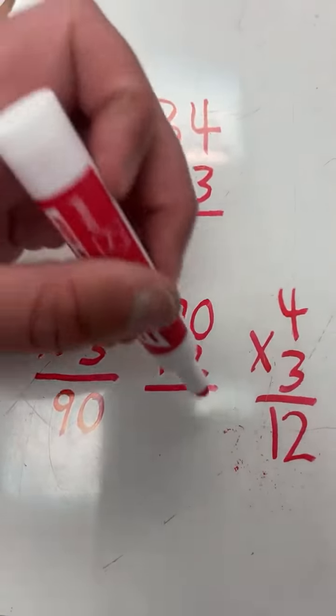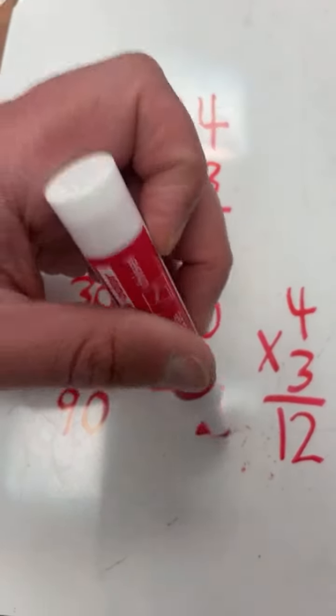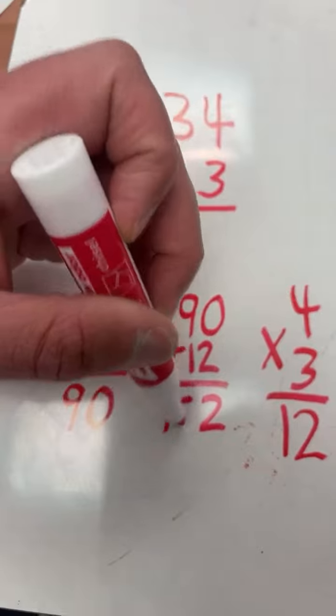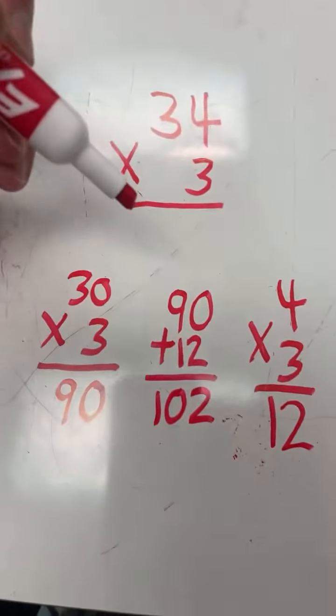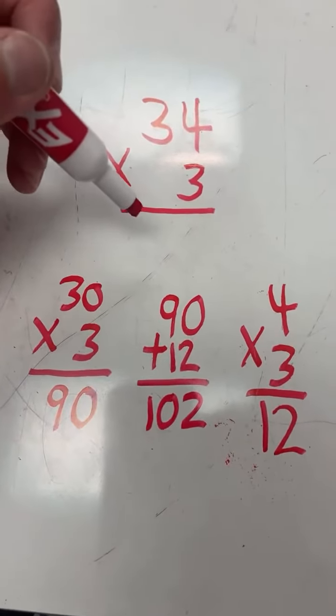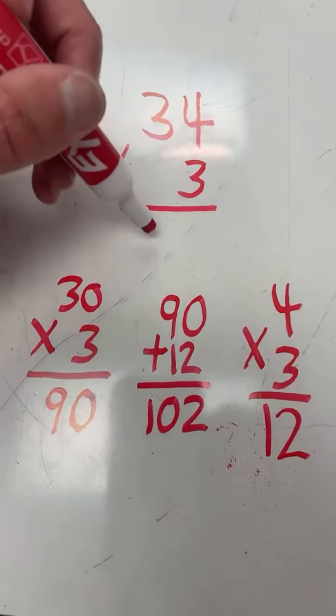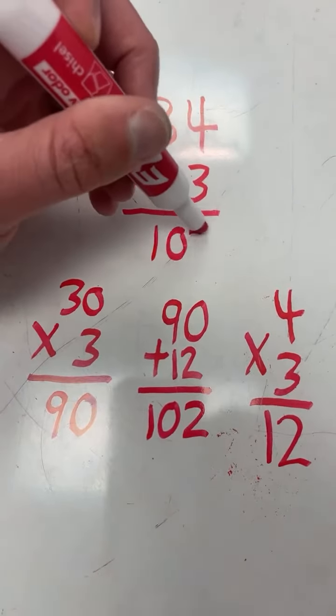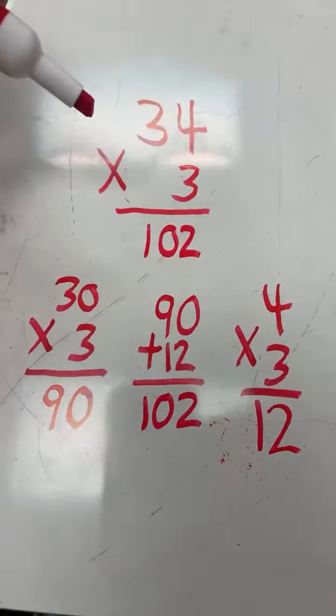0 plus 2 equals 2, 9 plus 1 equals 10, and our final answer is 102. 34 times 3 equals 102.